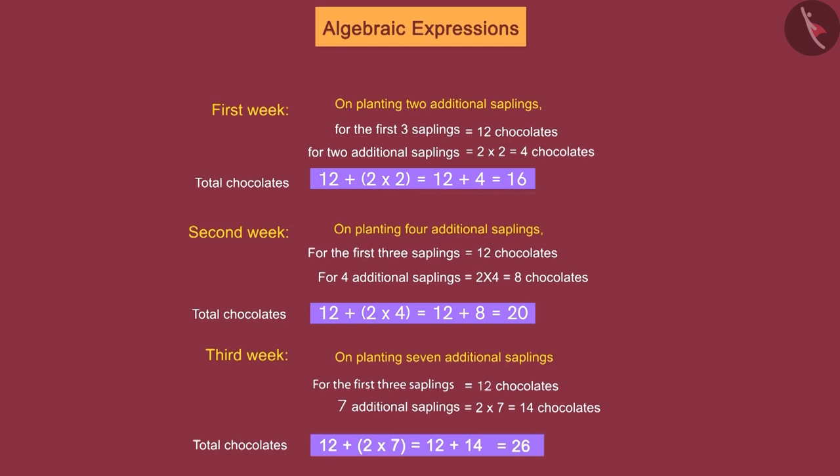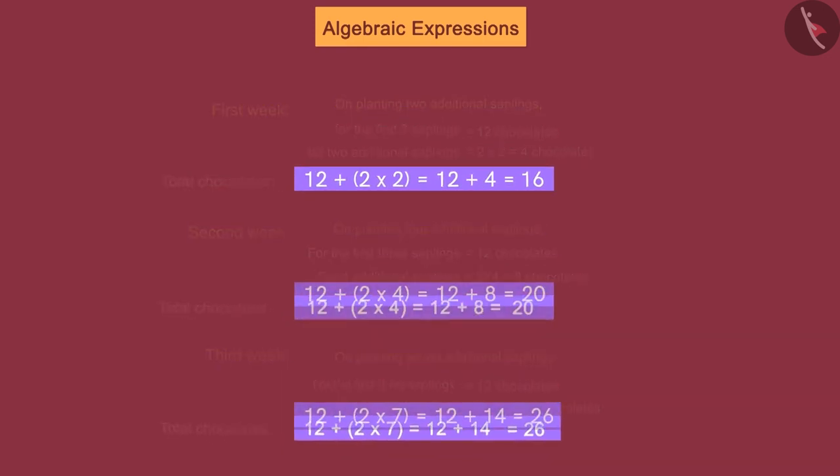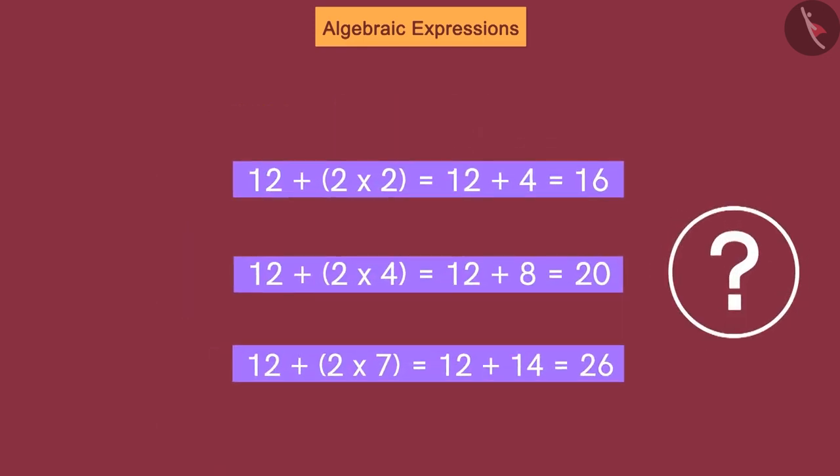Now, look carefully at these three calculations. Do we see any pattern? In each calculation, everything is the same except for two, four, seven. These numbers are the number of extra saplings Raghu has planted.